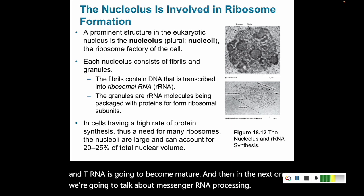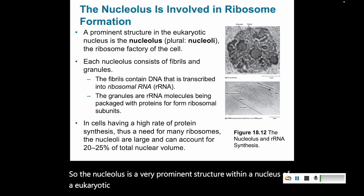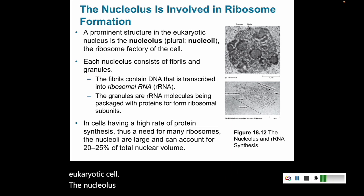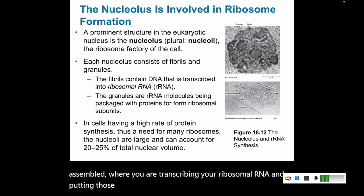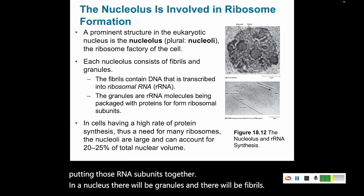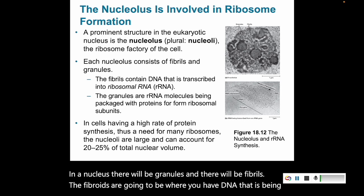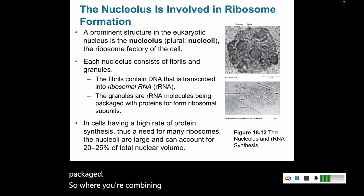The nucleolus is a very prominent structure within the nucleus of a eukaryotic cell. The nucleolus, or nucleoli, are where ribosomes are being assembled — where you are transcribing your ribosomal RNA and putting those RNA subunits together. In a nucleolus there will be granules and fibrils. The fibrils are where DNA is being transcribed, and the granules are where the RNA molecules are being packaged — where you're combining ribosomal RNA with proteins and forming those ribosomal subunits.